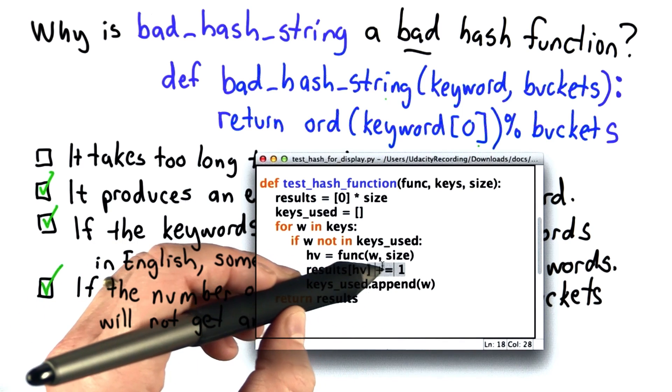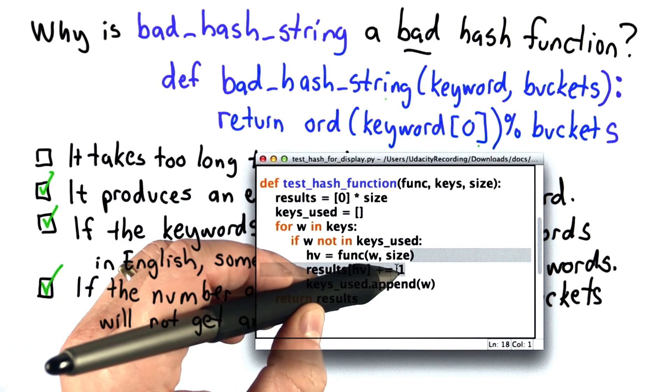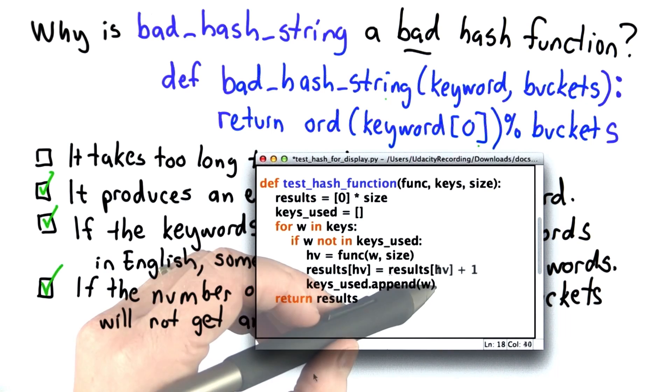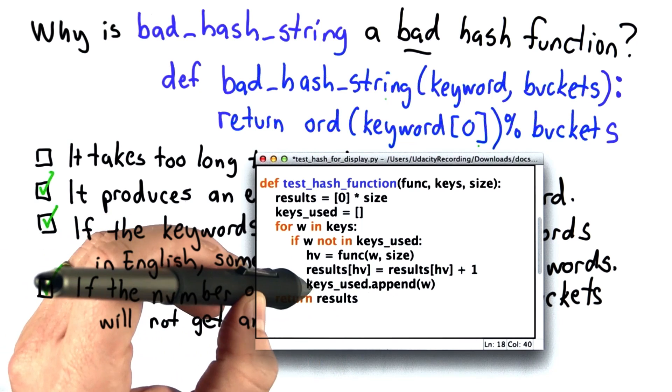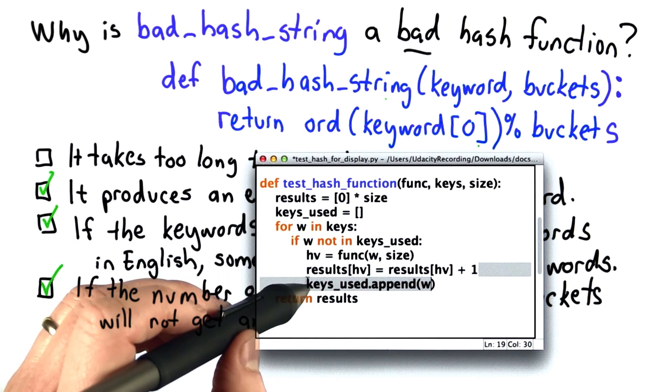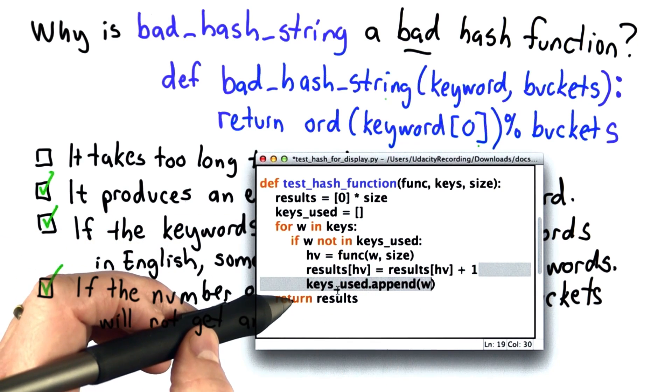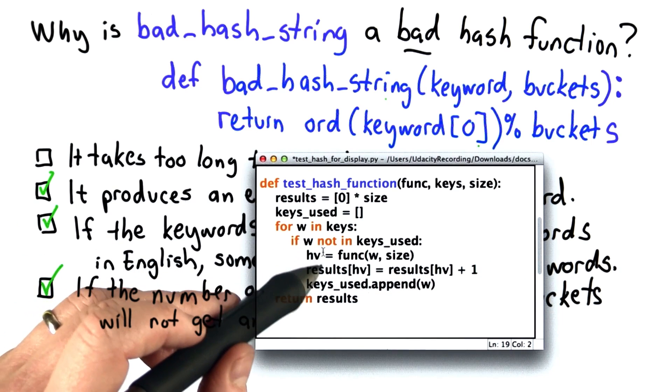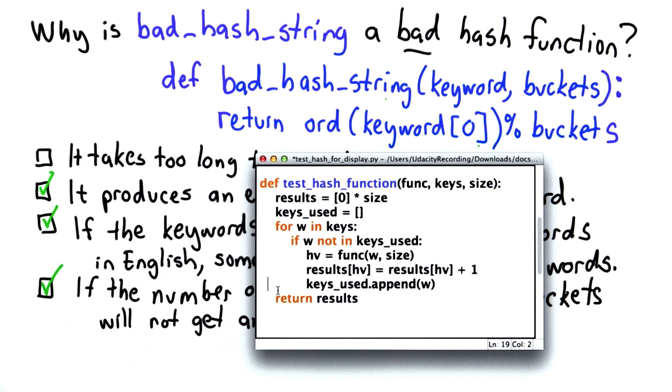And this is a shorthand syntax. It means the same thing as doing a new assignment where we're assigning to results[hv] the value currently in results[hv] plus 1. And then we're adding the word that we just used to the list of keys_used so we don't use it again. This is similar to what we did in the web crawler to avoid crawling the same page more than once. And at the end we'll return the results.